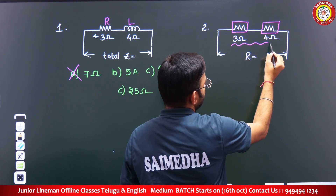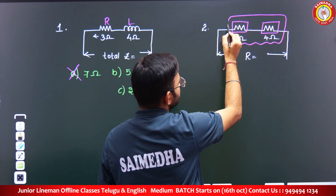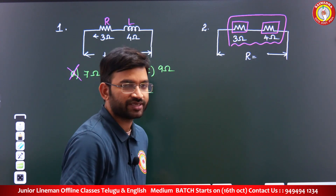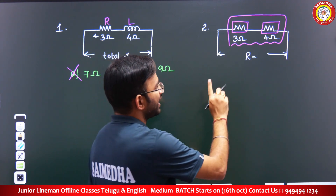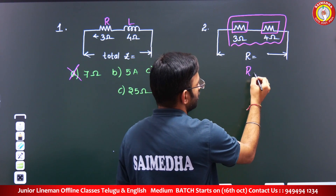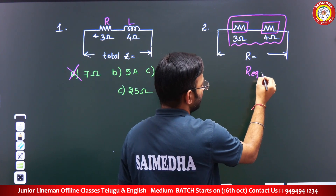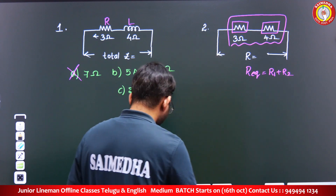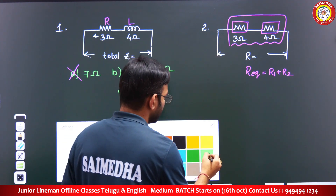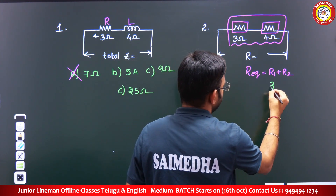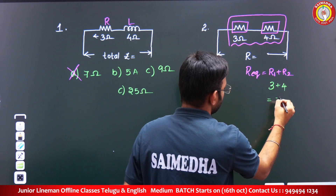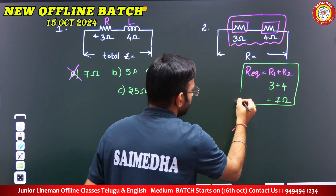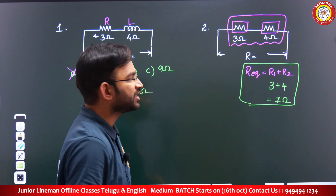When both elements are resistors only, we can do direct addition. R equivalent equals R1 plus R2. So when both are resistors, R1 plus R2: 3 ohms plus 4 ohms is nothing but 7 ohms. According to this, the direct addition is correct.